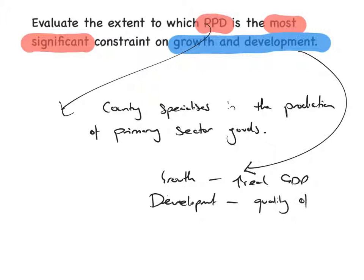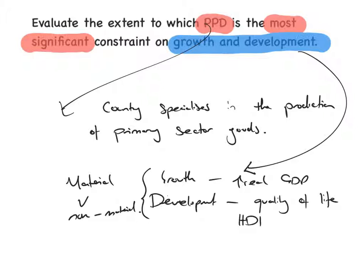An easy way to address development is to use the Human Development Index and its three aspects: mean years of schooling, life expectancy, and material standard of living. I also need to include some non-material aspects at some point. Finally, I need to pick up on the idea of 'most significant,' and I'll do that in my concluding paragraph.